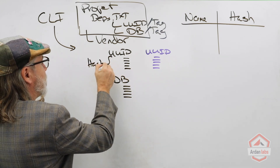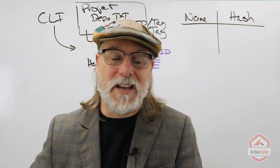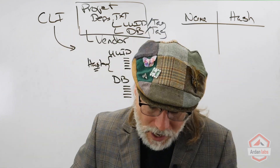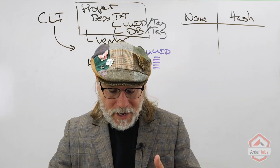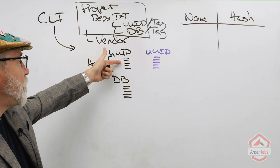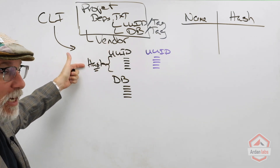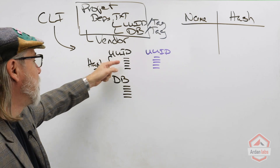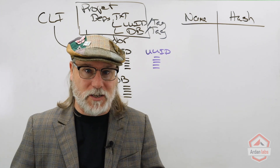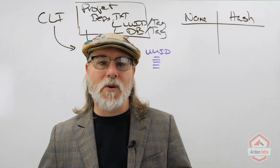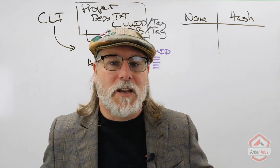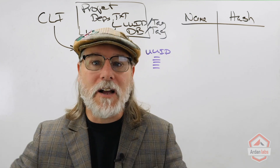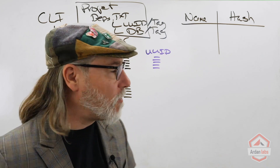We'll use the SHA-256 algorithm to generate the hash — any hashing algorithm works as long as it maintains three properties: first, the same input always produces the same hash; second, changing even just one byte of input produces a completely different hash with no correlation to the original; and third, there are no collisions — no two different inputs can produce the same hash. These are core hashing algorithm requirements, and SHA-256 satisfies all of them.